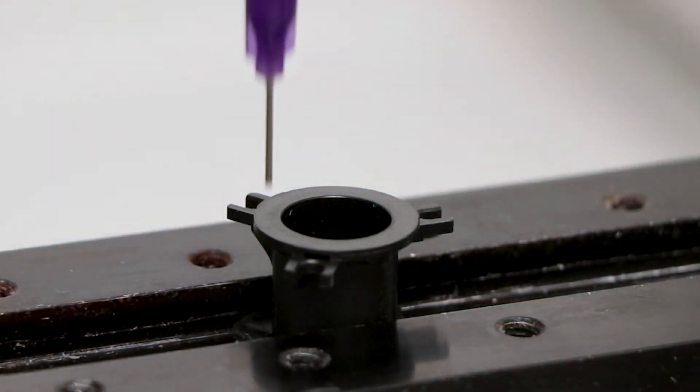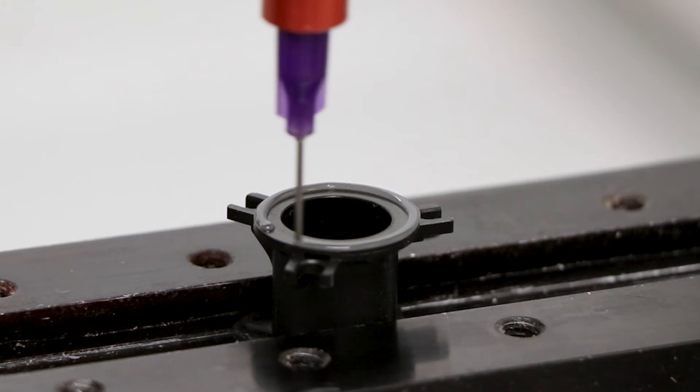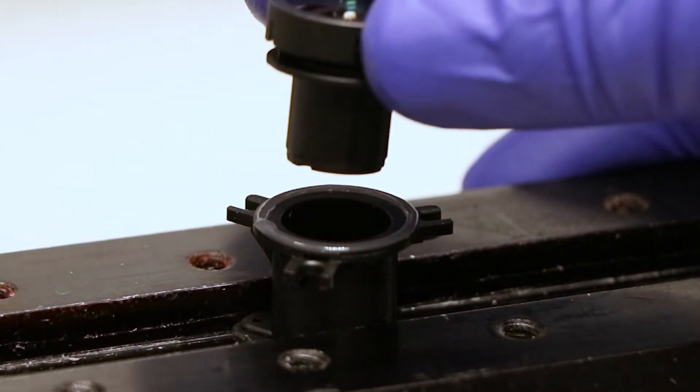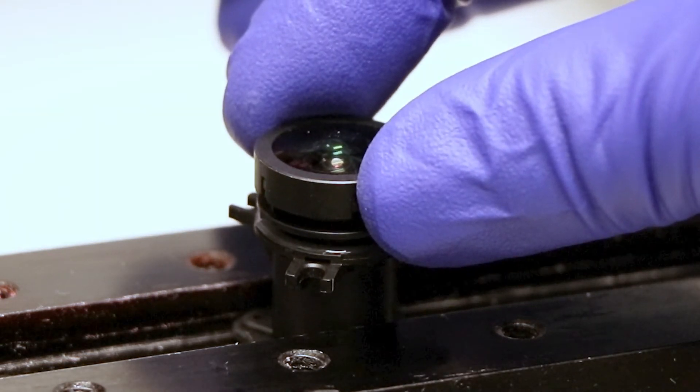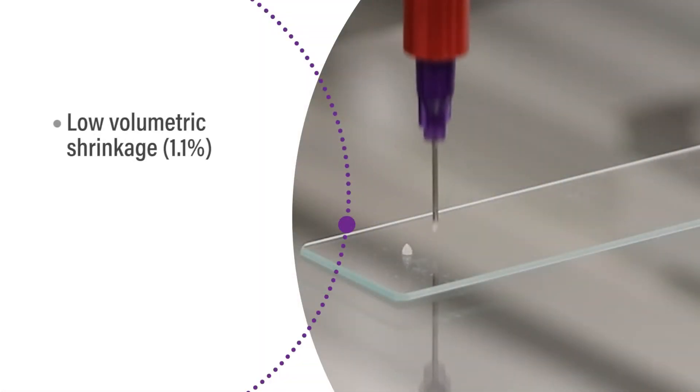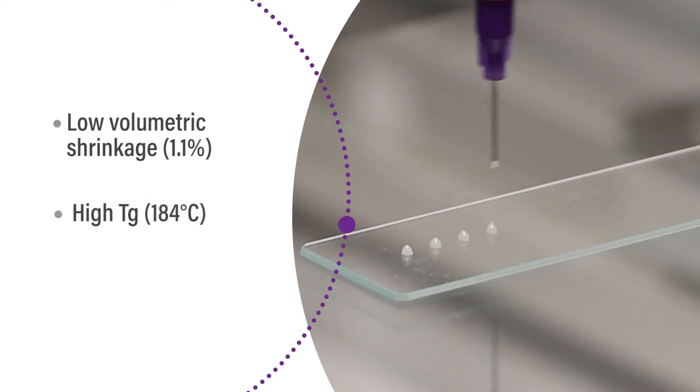This one-component solvent-free epoxy also meets the NASA ASTM E595 Low Outgassing specification, which is critical to optical positioning and lens applications. Along with its low volumetric shrinkage at 1.1%, 9803 has a